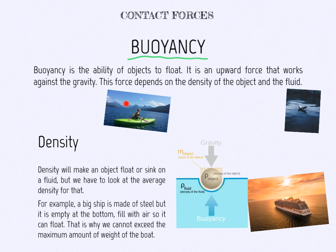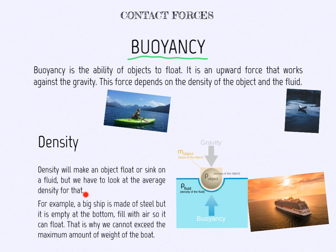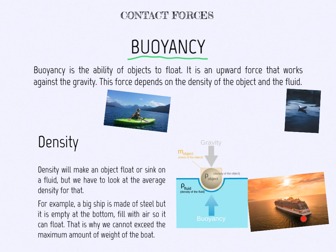We can see here a kayak floating on the sea and a small paper boat also floating. We need to know about density — density will make an object float or sink in a fluid, but we have to look at the average density. For example, a big ship is made of steel, but it is empty at the bottom, filled with air, so it can float. That is why you cannot exceed the maximum weight on a boat. A piece of steel alone will sink, but the boat is made so it can float because it has air inside.